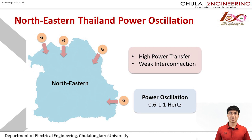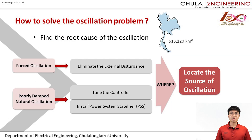This oscillation problem tends to occur in the north-eastern region of Thailand with 0.6 to 1.1 Hz oscillation frequency, due to high-power transfer, especially in rainy seasons from Laos hydropower plants, and weak interconnection with Laos worsens this problem. In order to solve the root cause, the oscillation source needs to be identified and the external disturbance eliminated. In forced oscillation type, properly tuning the controller or installing a power system stabilizer helps mitigate the problem, so it is important to locate the oscillation source.